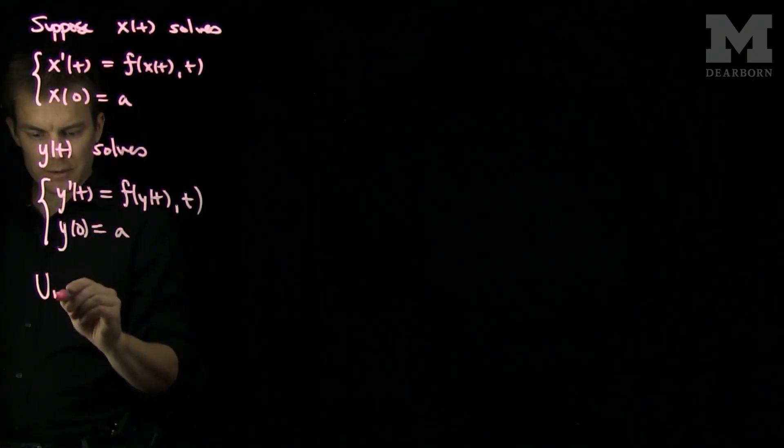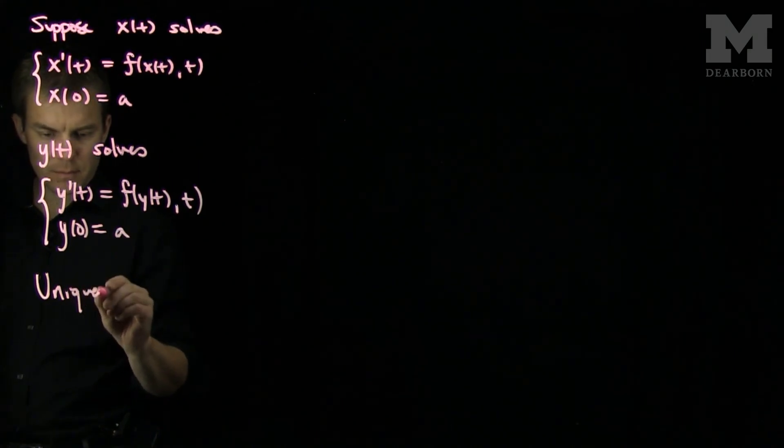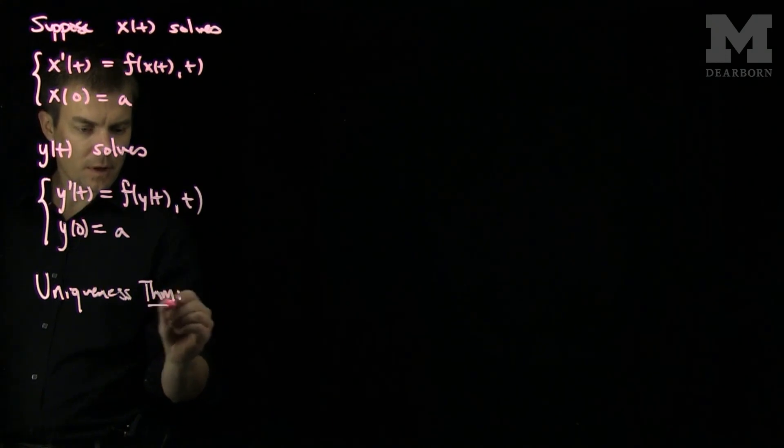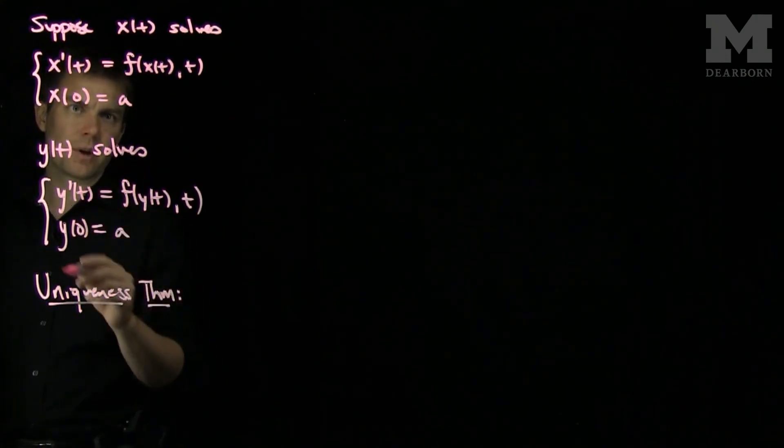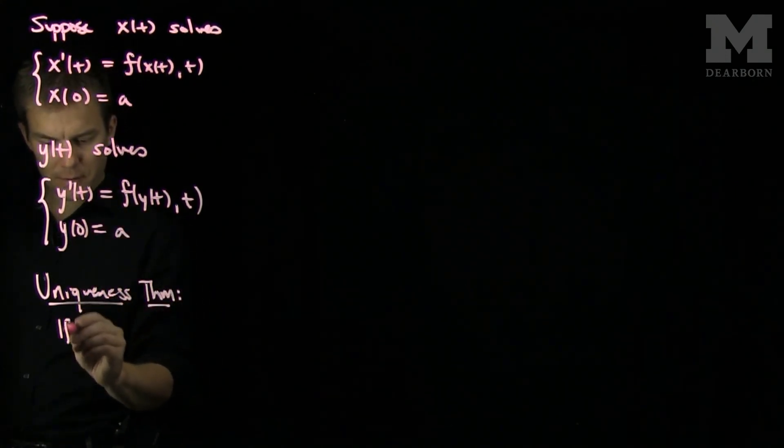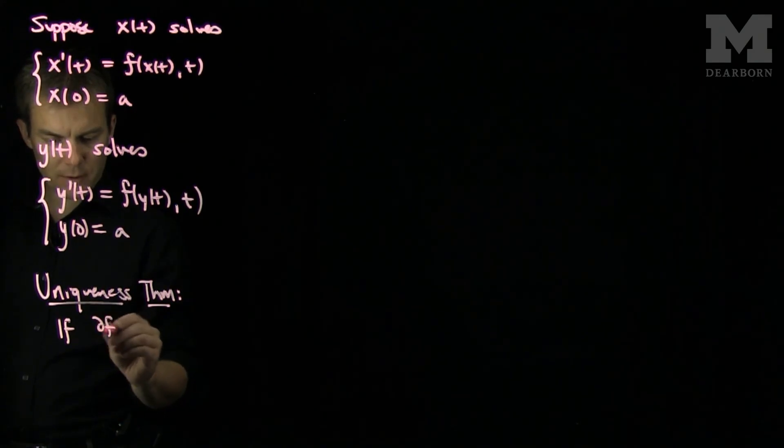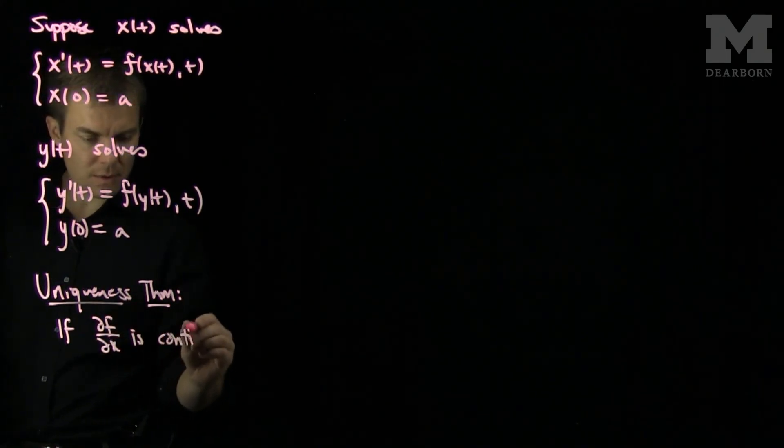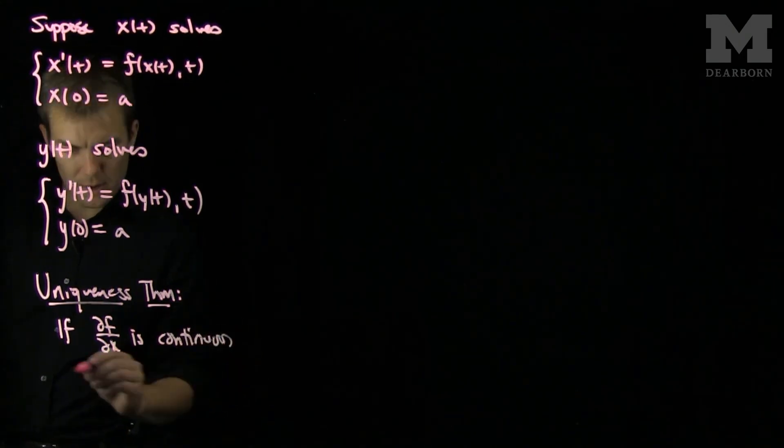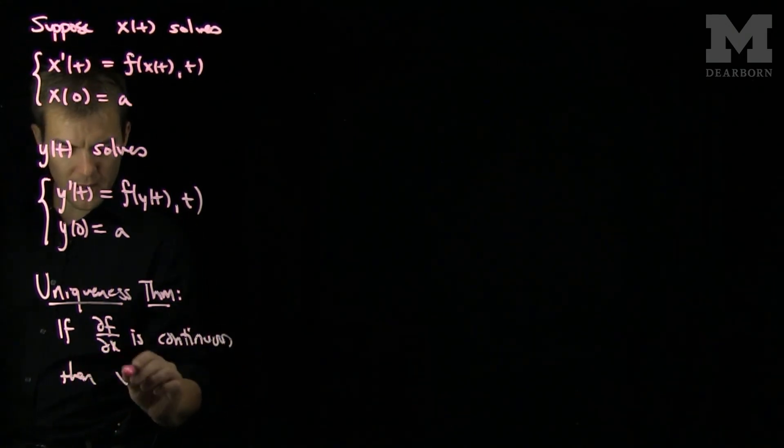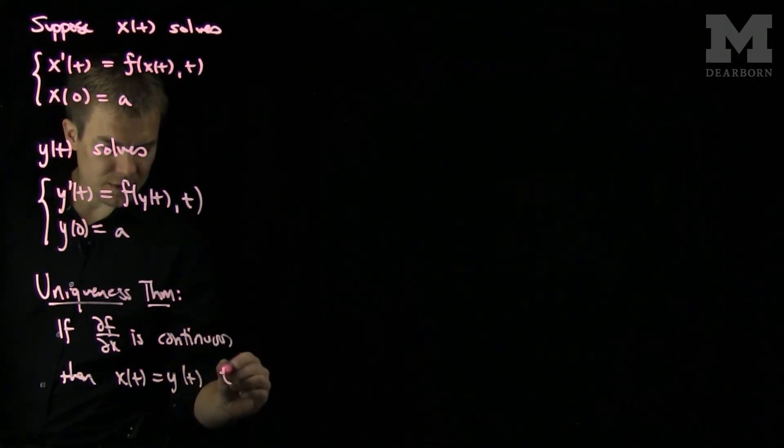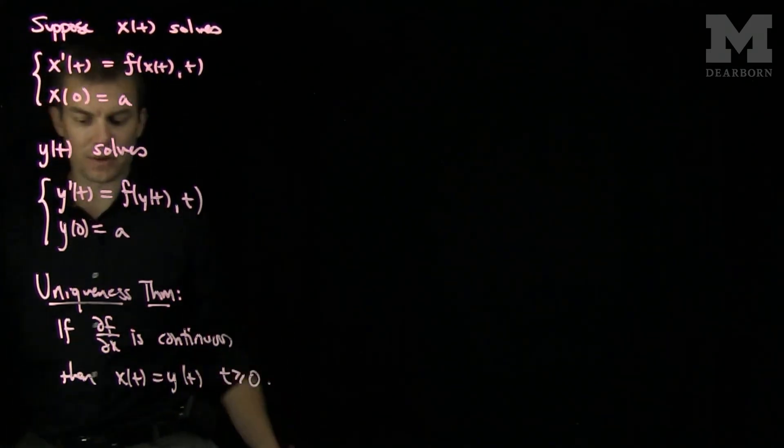We have the uniqueness result. The uniqueness theorem says that if this situation is true, if partial f partial x is continuous, then x of t is equal to y of t for t greater than or equal to 0.